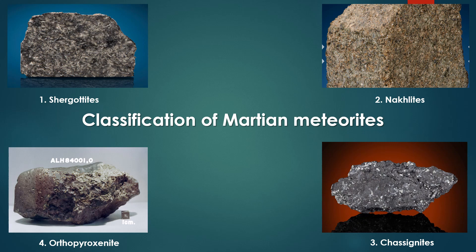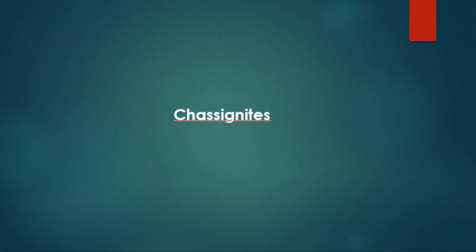Second: Nakhlites. Characteristics: composed primarily of augite, a type of pyroxene, and olivine, often showing signs of alteration. Age: around 1.3 billion years. Origin: thought to have crystallized from lava flows or sills.